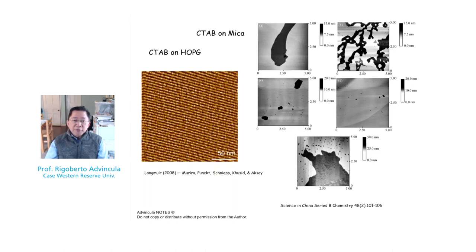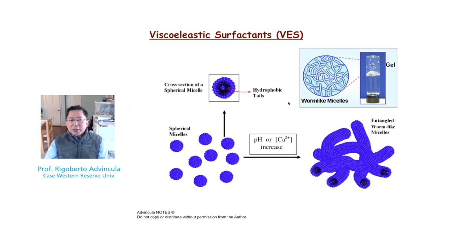Now let us discuss viscoelastic surfactants. What are viscoelastic surfactants? These are essentially micelles where, if you go beyond the CMC to concentrations anywhere from 1 to 15 percent by weight, the micelles tend to form cylinders. These cylinders elongate, forming a network structure that random-walks to avoid each other, forming worm-like micelles. The consequence is a dramatic increase in viscosity — hence the term viscoelastic surfactants.